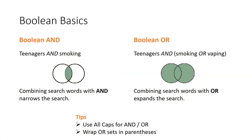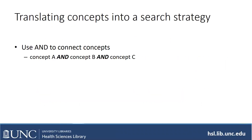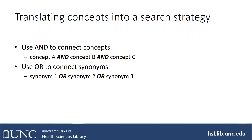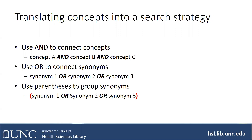So here we have 'teenagers AND smoking' — that would give you the narrow set. And then if you added the term 'vaping' with an OR between it, you would broaden it a little: teenagers AND either smoking OR vaping. You'll notice that you always wrap the OR sets in parentheses — that makes sure the two synonyms are combined first, and then that whole set is combined with teenagers. Many databases prefer all caps for your connectors — AND, OR, NOT — so we tend to do that. Use OR to connect your synonyms, AND to connect your concepts, and parentheses to group your synonyms.